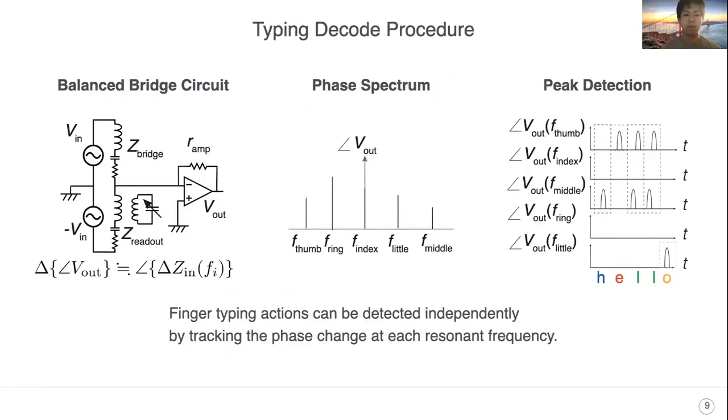Since we assign different resonant frequencies to our five rings, the finger typing action can be detected independently by tracking the phase change of each resonant frequency. Thus, we detect the typing action through the change of the output phase and decode the typing sequence into characters.